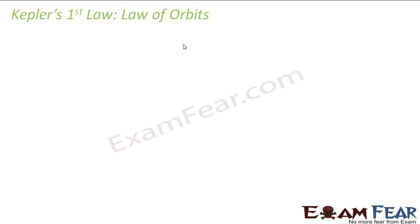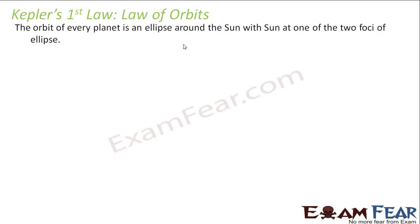Kepler's first law is also known as the law of orbits. It states that the orbit of every planet is an ellipse around the sun, with the sun at one of the two foci of the ellipse. Kepler corrected Copernicus by showing that planets do not move in circular orbits; instead they move in elliptical paths, with the sun located at one of the foci.